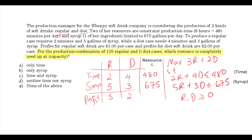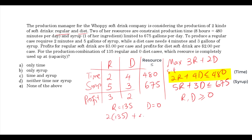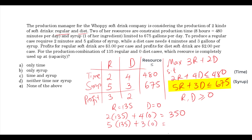For the production combination of 135 regular and 0 diet cases, which resource is completely used up? All we need to do is plug in R equals 135 and D equals 0 into the constraints and see which one will have slack. For the first constraint: 2 times 135 plus 4 times 0 gives us 270. For the second constraint: 5 times 135 plus 3 times 0 gives us 675.